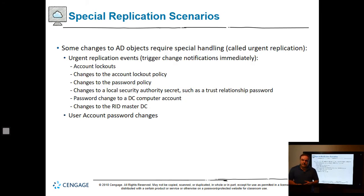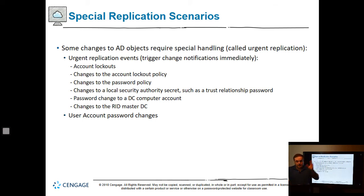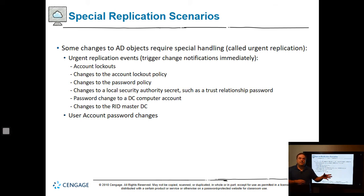Some changes to AD objects require special handling called urgent replication — for example, an account lockout. If the CEO gets locked out, the administrator has to reset the account and that change must replicate to all domain controllers at once, because you don't know which DC he'll authenticate to when he logs on. When you take an account off lockout, it triggers urgent replication — it doesn't wait the 15 minutes. User account password changes are also handled this way.